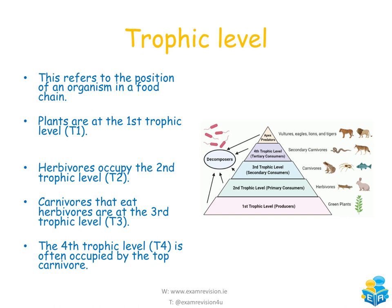The trophic level refers to the position of an organism in a food chain. The first trophic level (T1) is the plants or producers. The second trophic level (T2) is where the primary consumers are. The third trophic level (T3) is where the secondary consumers are. The fourth trophic level (T4) is where the tertiary consumers are. These are sometimes referred to as T1, T2, T3, and T4.